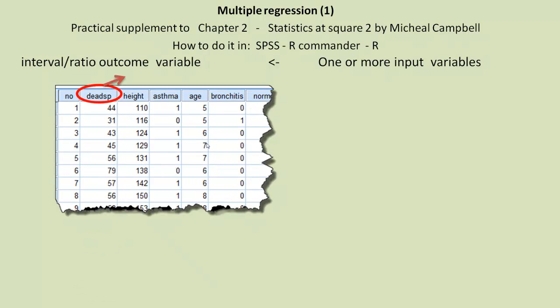So here's some data that Campbell gives. We've got dead space, which is the amount of dead space in the lungs, which is our outcome variable. So we're saying that is affected by certain inputs. The inputs in this instance are height, asthma status, age, and bronchitis status.